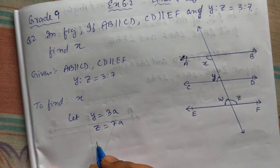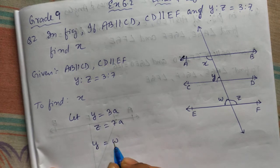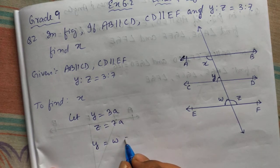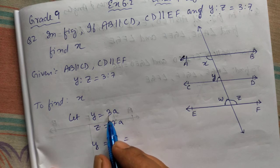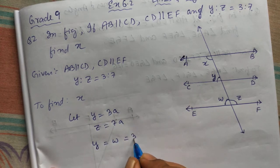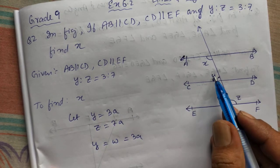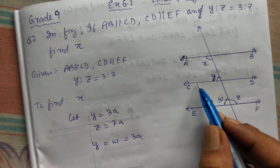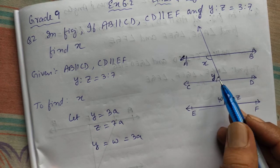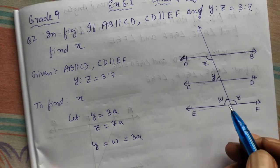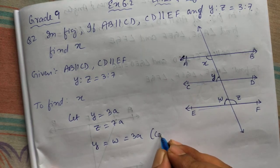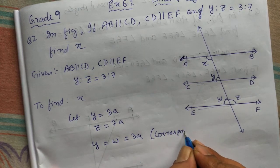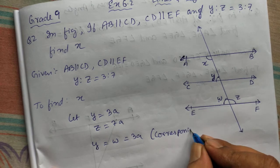You can write y equal to w. Why they are same? Corresponding angle. Two parallel lines, crossing one angle here. Corresponding angle. Reason is corresponding angles.